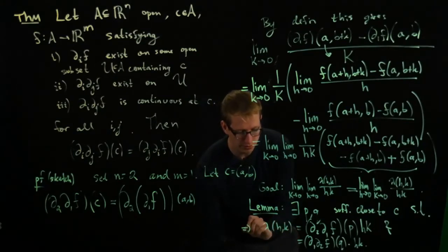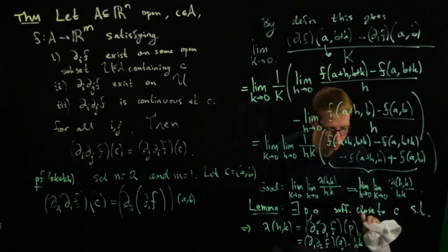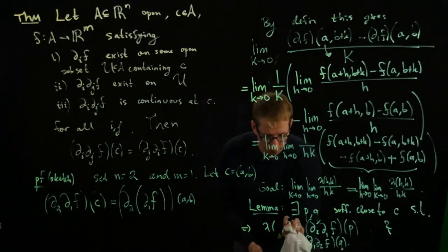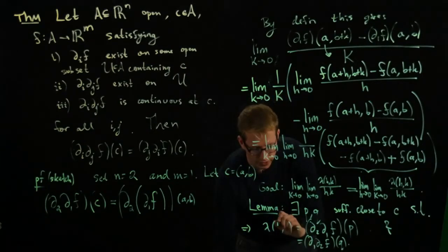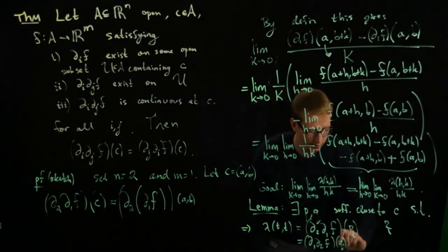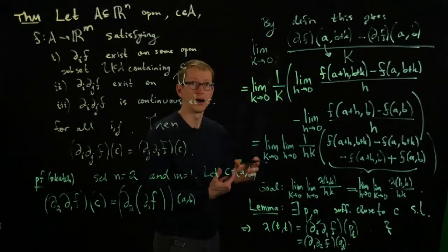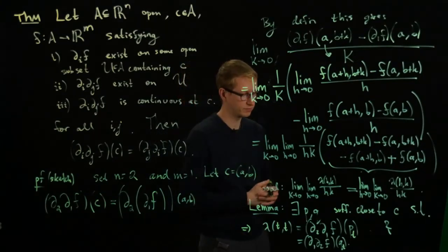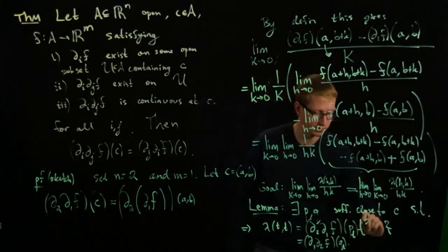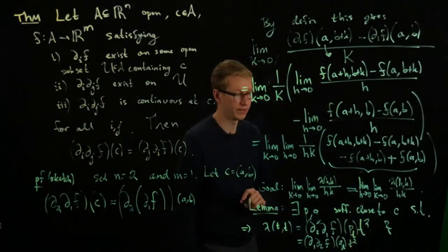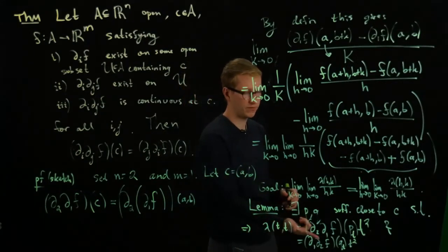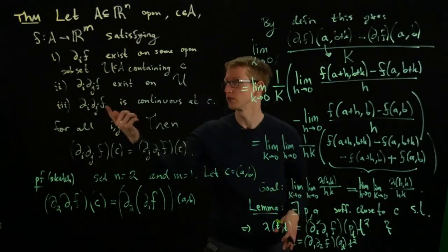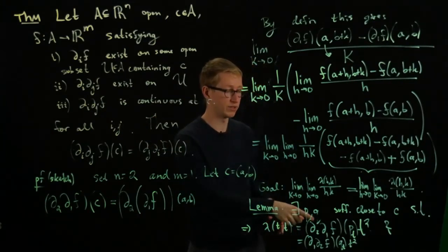It follows from this lemma that if I replace h and k by some arbitrary T, we can use the lemma to prove, over and over again for every single value of T, that there exists a point P(T) and Q(T) inside this rectangle of side lengths T with one corner at C. We have to multiply by T squared. When we divide by T squared, we have these two identical expressions, and then applying the limit—because these functions are continuous at C—the limits are both going to be equal.